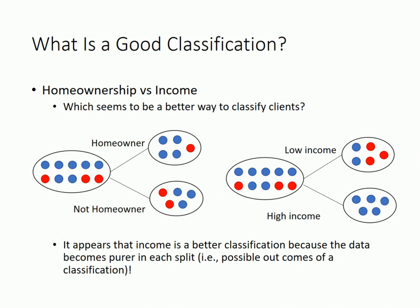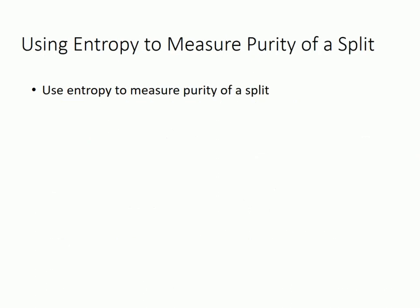This gives you a visual sense of what is a good classification, but we can't always visually assess that — we need a quantified way to measure how good a classification is. To measure how good a classification is, we first measure how good a split of a classification is. This is done by something called entropy.